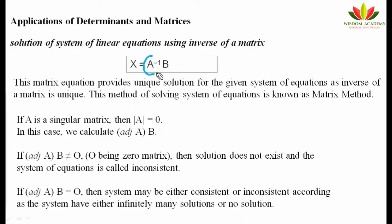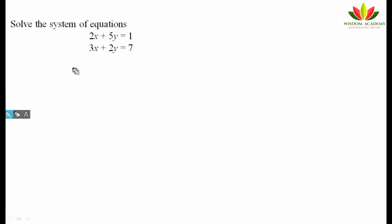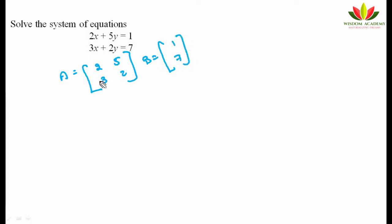Note that A⁻¹ exists only if |A| ≠ 0 — i.e., the matrix must be non-singular. For the given system of equations, we form matrix A from the coefficients: x-coefficients give [2,1; 3,?] and y-coefficients give the remaining column [5,1; 2,...], and matrix B contains the constants on the right-hand side. Matrix X contains the unknowns x and y.